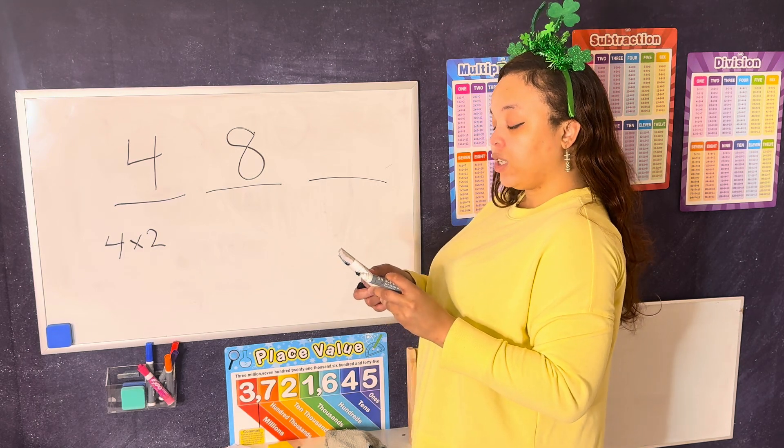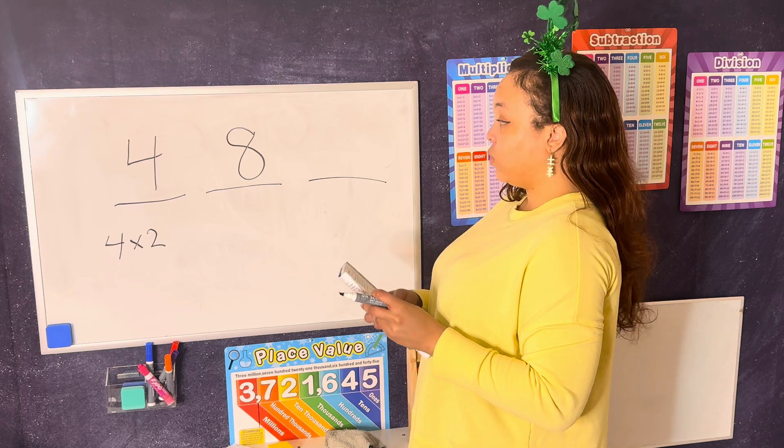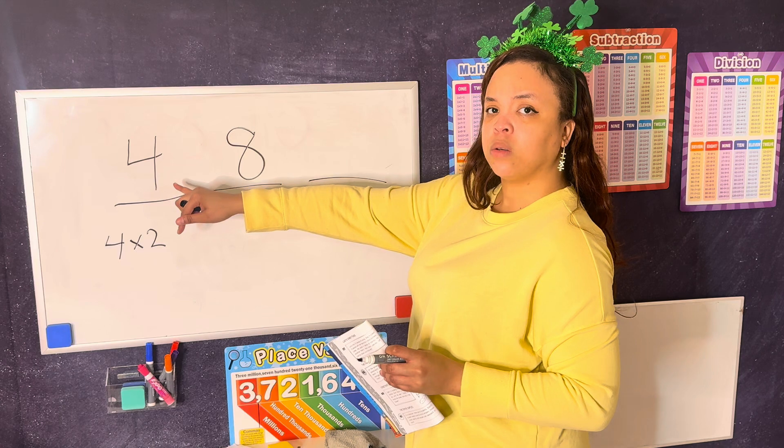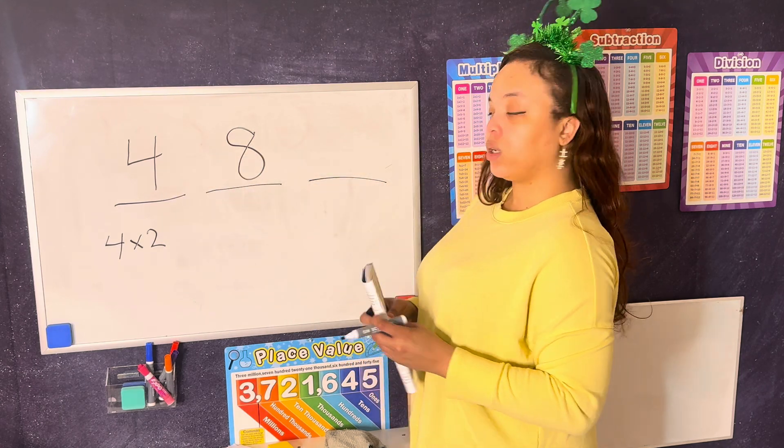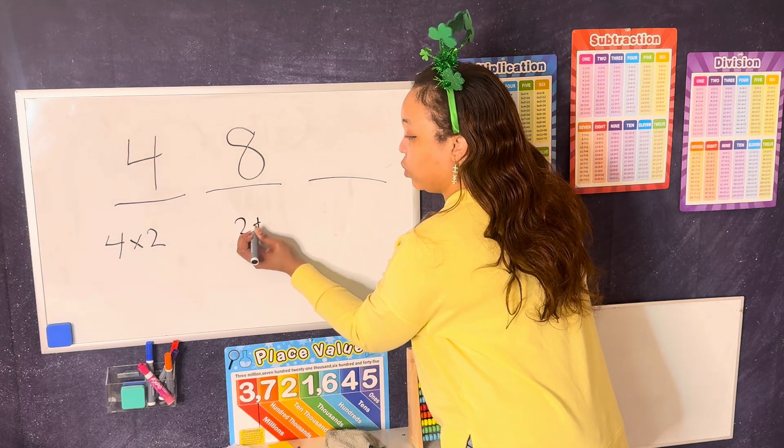The third digit is half of the first digit. So we can simply just, what's half of 4? What equal number adds up to 4? That will be 2 plus 2.